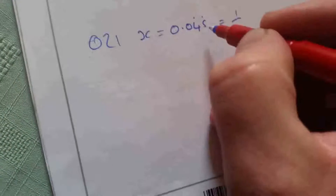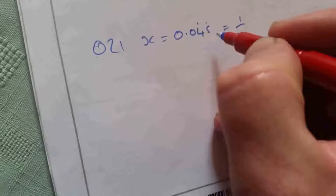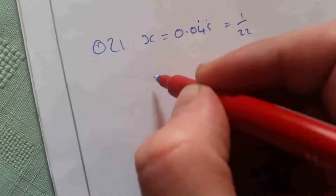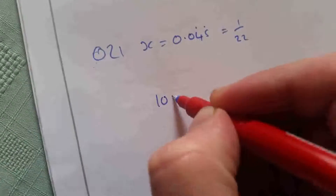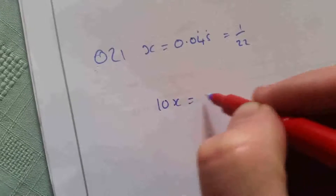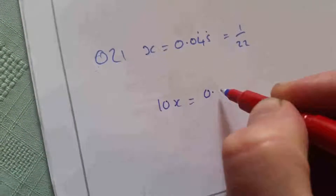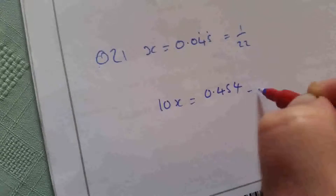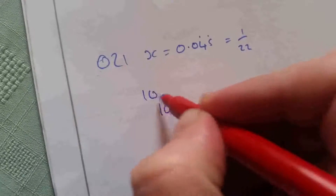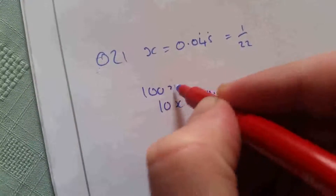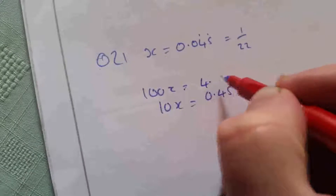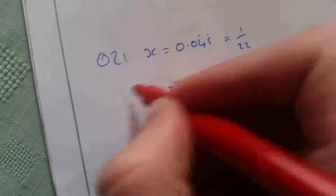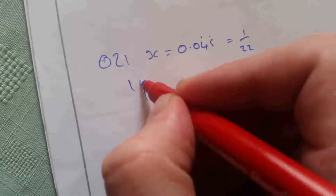The way we do this — I know the next two numbers are going to be 4545, so I can work out that 10x is going to be 0.4545... and 100x is going to be 4.545...